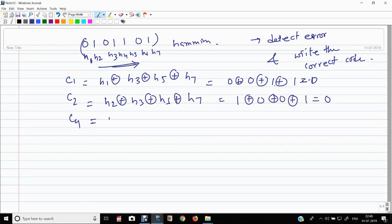And for that, H4 plus H5 plus H6 plus H7, so this will be 1 plus 1 plus 0 plus 1, this will be 1. So, C4, C2, C1, 1, 0, 1.